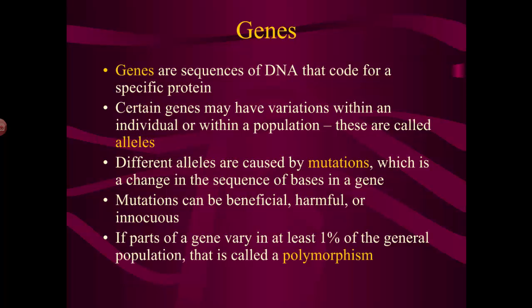If you have a change in spelling, and that change in the sequence of bases in a gene is found in at least one percent of every individual in that population, then we call that a polymorphism. Blonde hair is an example — more than one percent of the general population has blonde hair, meaning more than one percent of the population has that variation, and therefore it's a polymorphism.